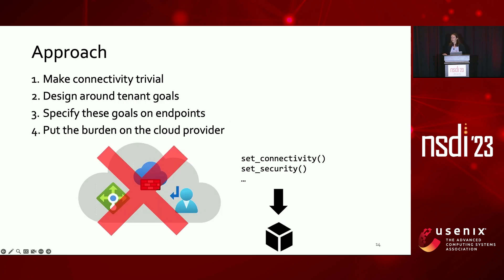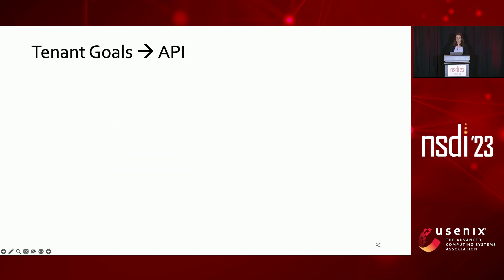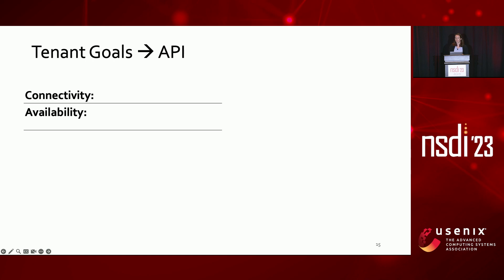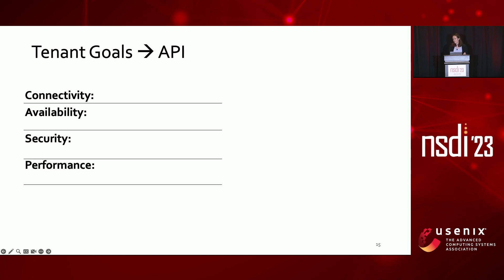Now that we have our connectivity assumption, we'll address the latter goals by defining the API. We'll define the API in terms of the tenant's high-level goals. The essential parts of the API in this talk are the parts for connectivity. We believe that the tenant's high-level goals are connectivity, availability, security, some sense of performance, and easy management.